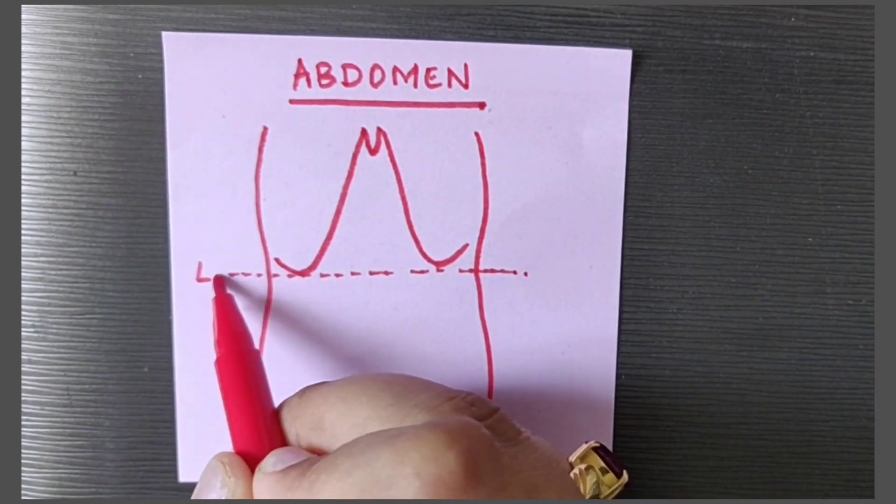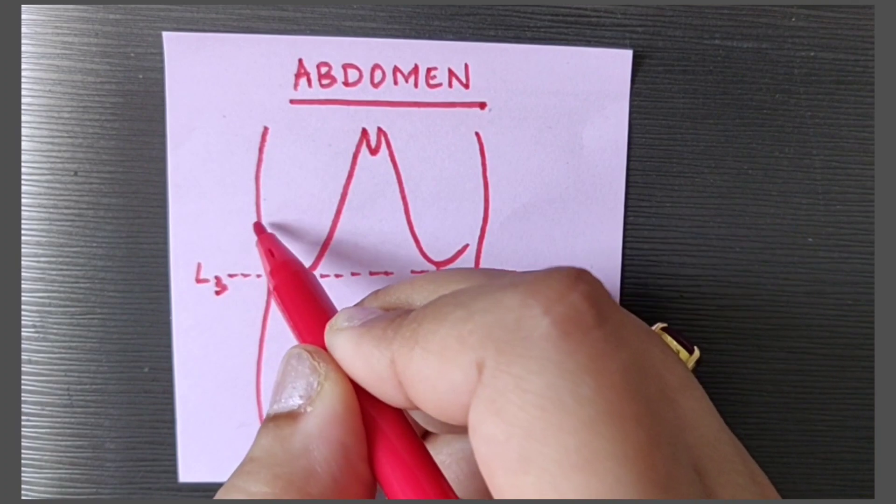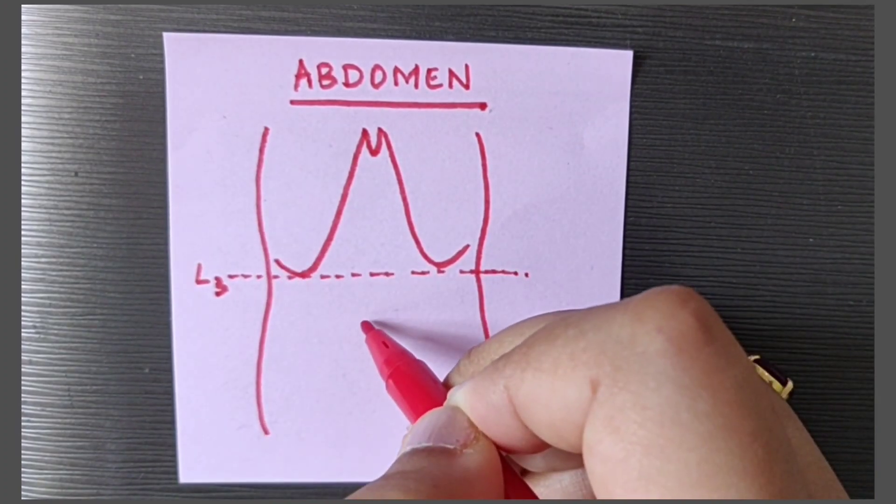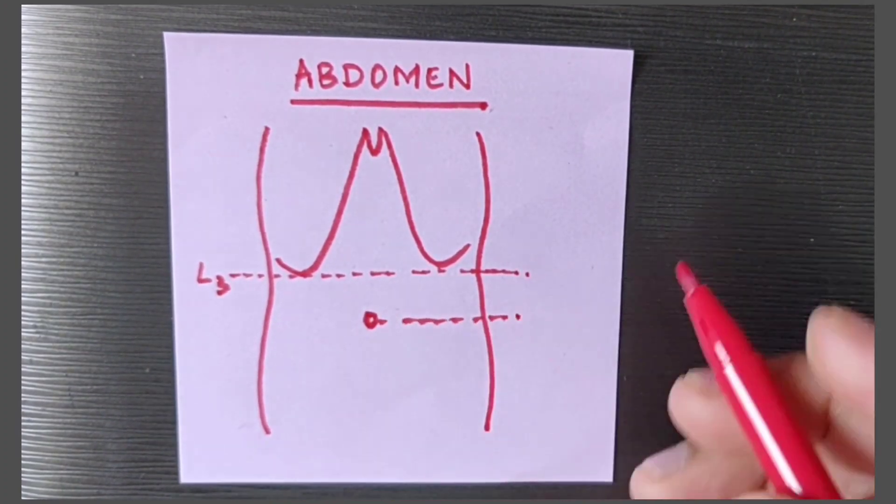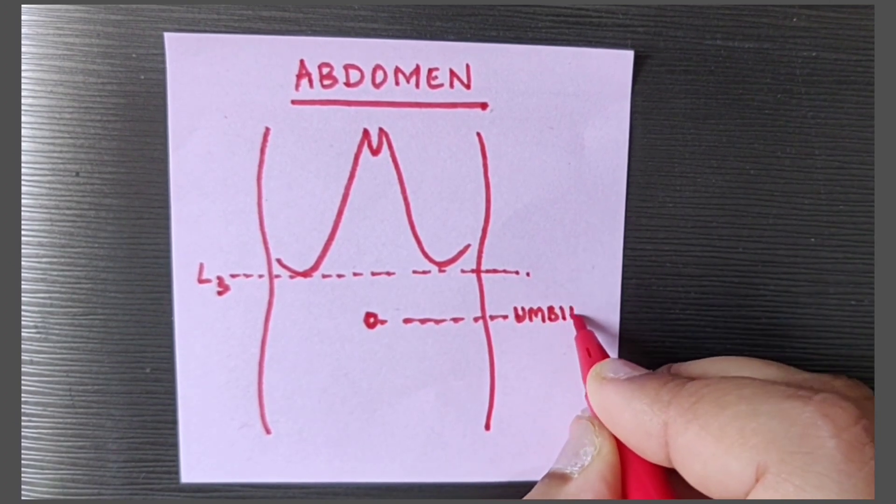Below the costal margins we have the subcostal plane which is at the level of third lumbar vertebra, and here we have the umbilicus at the level of L3 and L4.